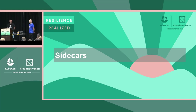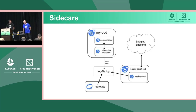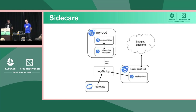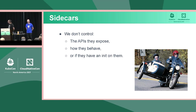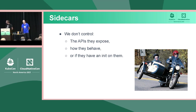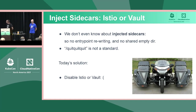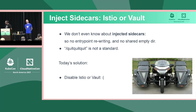It's hard to talk about writing your own controller and creating pods without talking about sidecars. A sidecar is a container that runs next to your main container and provides some kind of facility — usually a cross-cutting concern, like the log collection sidecar example straight from Kubernetes documentation. The problem with sidecars is we don't control them — they can be unruly. We don't know if they'll handle SIGTERM correctly, or even if they have an init process. They're a bit of a black box.